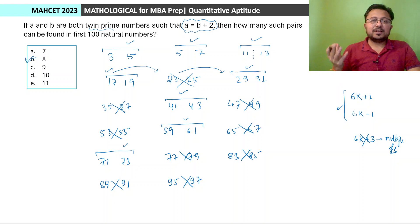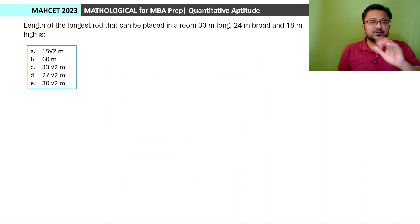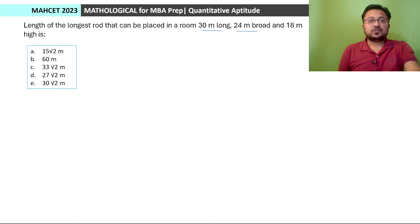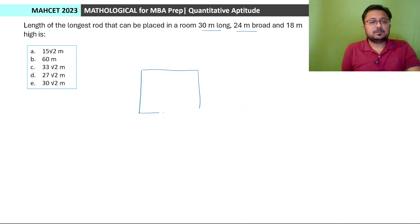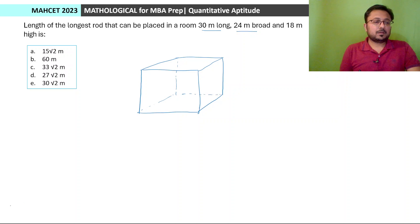In the exam you don't need to write this much. You only need to write the relevant pairs straightaway. You don't even need to write both numbers — writing one number is enough to indicate the pair. Next: length of the longest rod that can be placed in a room 30 meters long, 24 meters broad, and 18 meters high.